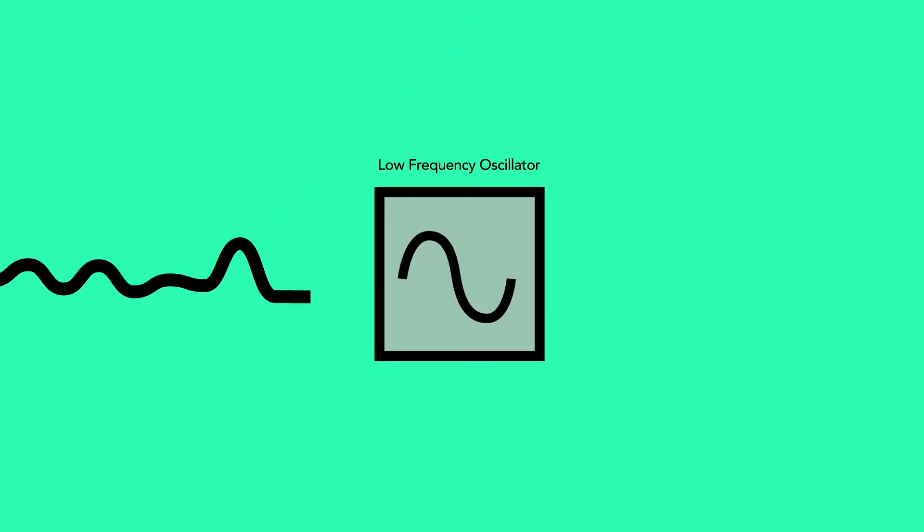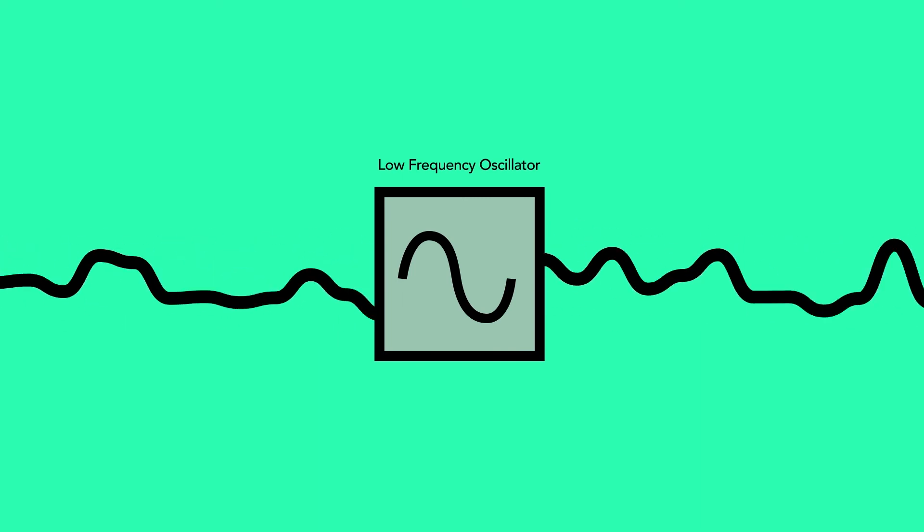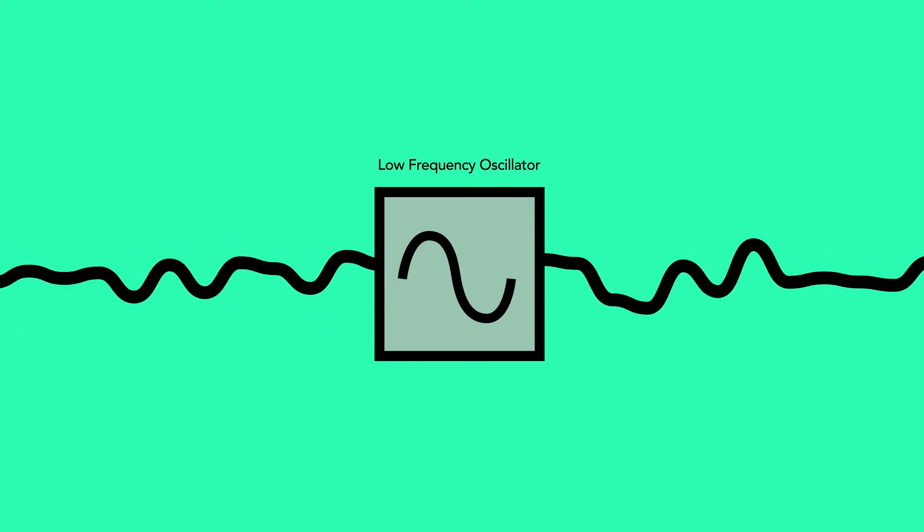An LFO swings back and forth but outputs a signal that is not coloring the sound. Instead, we use that oscillation to control other parameters.